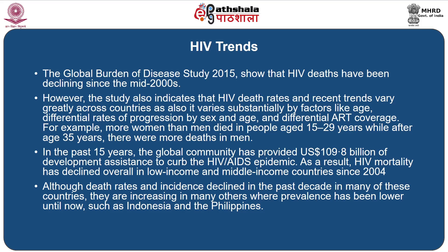In the past 15 years, the global community has provided 109.8 billion US dollars of developmental assistance to curb the HIV and AIDS epidemic. As a result, HIV mortality has declined overall in low-income and middle-income countries since 2004. Although death rates and incidence declined in the past decade in many of these countries, they are increasing in many others where prevalence has been lower until now, such as Indonesia and the Philippines.